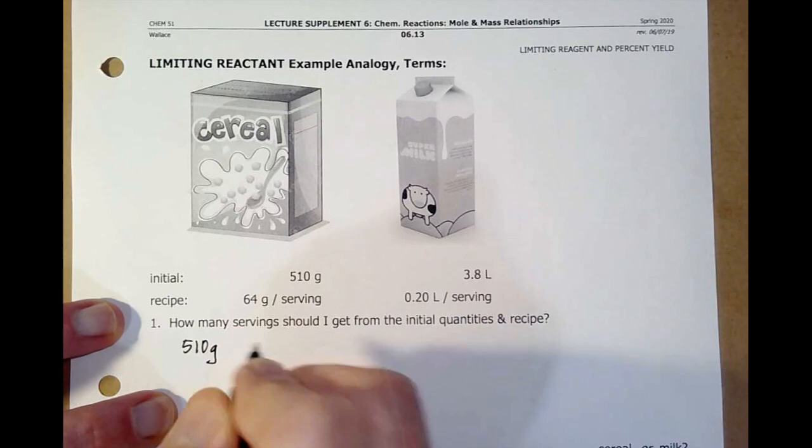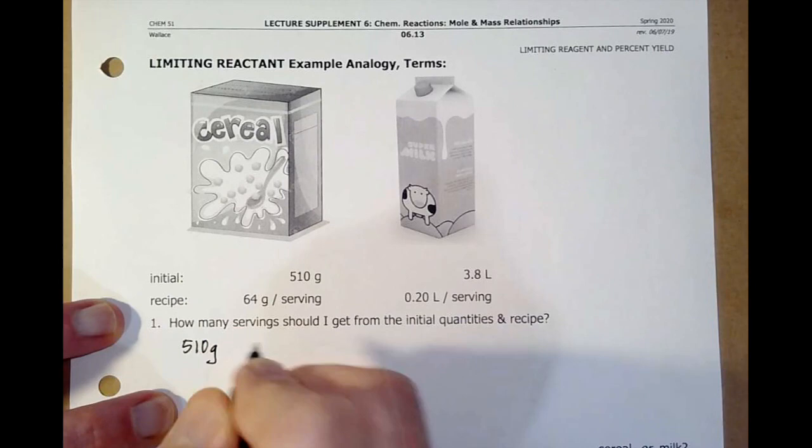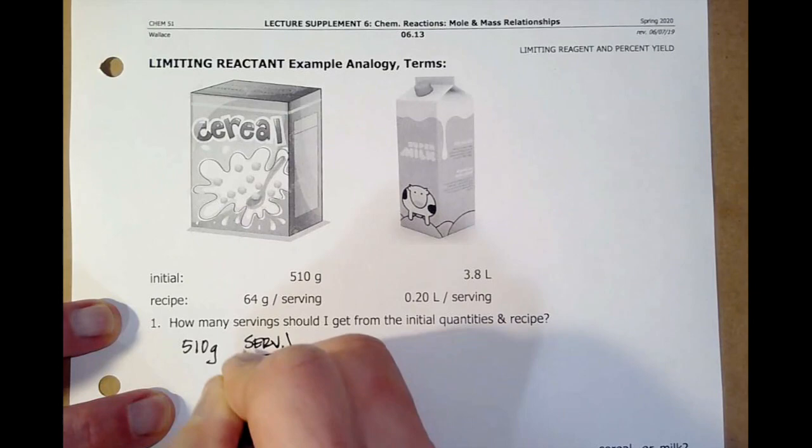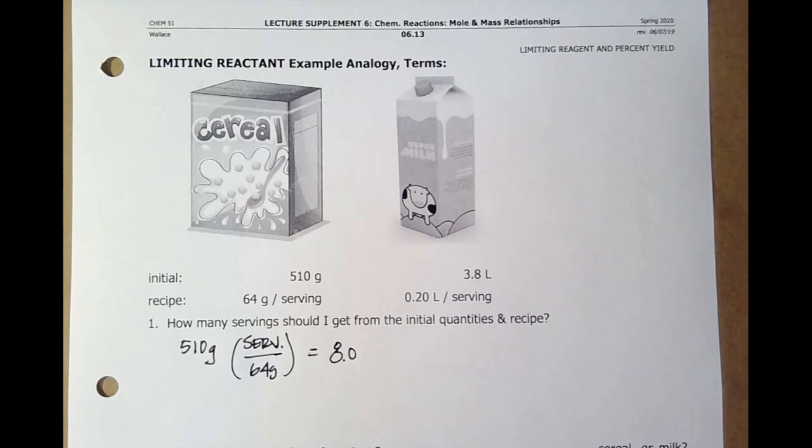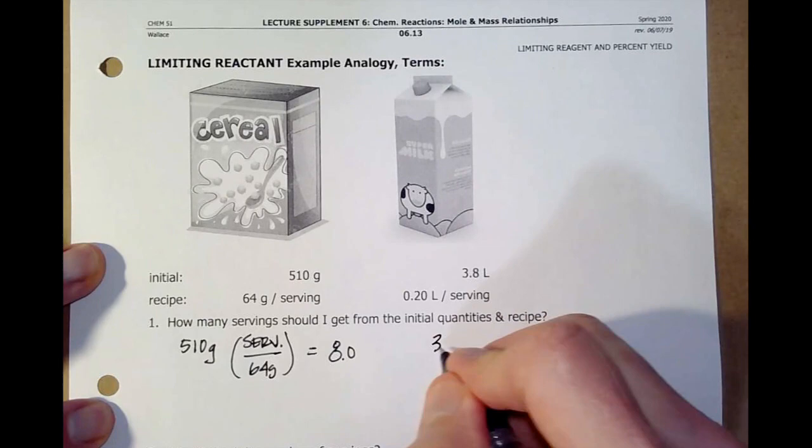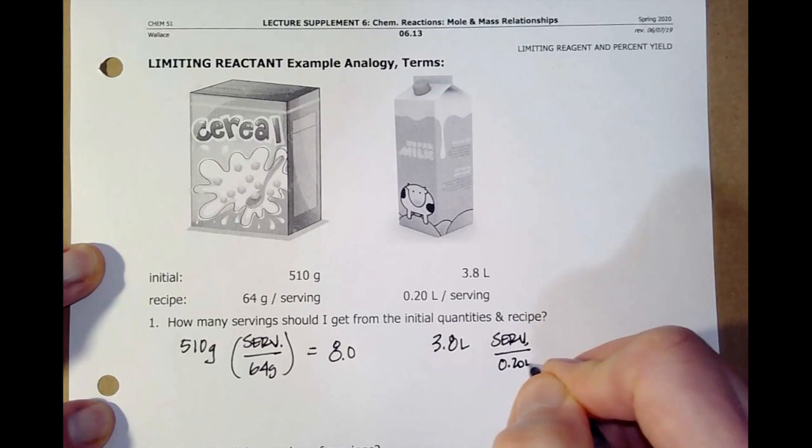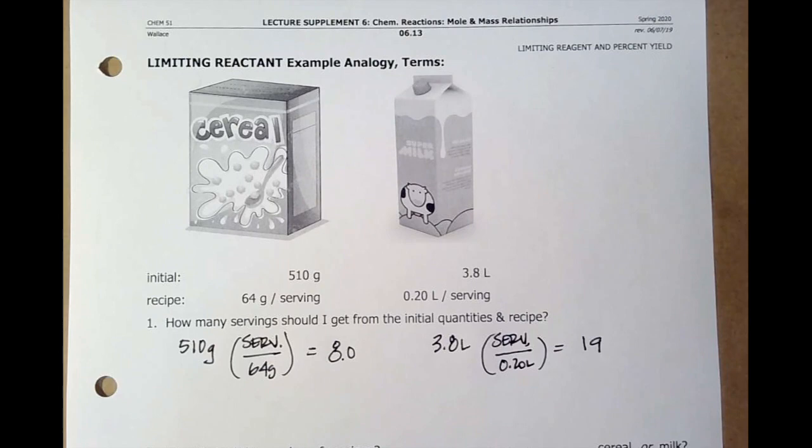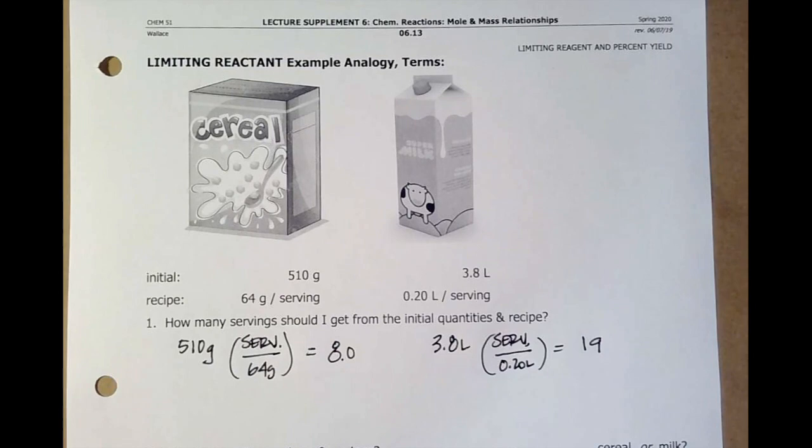Well, I actually have to do two calculations. I have to figure out this cereal, 510 grams times one serving per 64 grams. And that gives me eight servings of cereal. Now if I do the same thing for the milk, 3.8 liters, one serving per 0.20 liters, I get 19 servings. And if you eat a lot of cereal, you know this. I never make it work out that I just finished the cereal and just finished the milk at the same time. So the question is, well, what has limited my number of servings?